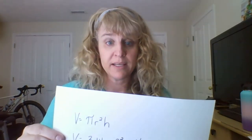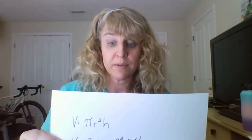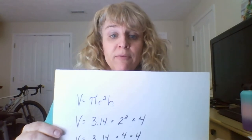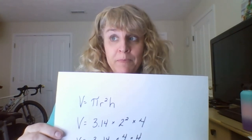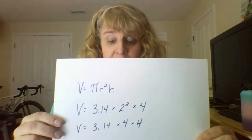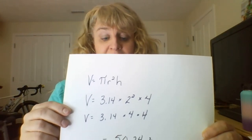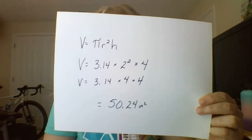Now we put it into our formula. The formula is volume equals pi r squared times h. Plugging those in, we get volume equals 3.14 times 2 squared times 4. We start by doing the powers — 2 squared is 2 times 2 — which gives us volume equals 3.14 times 4 times 4.